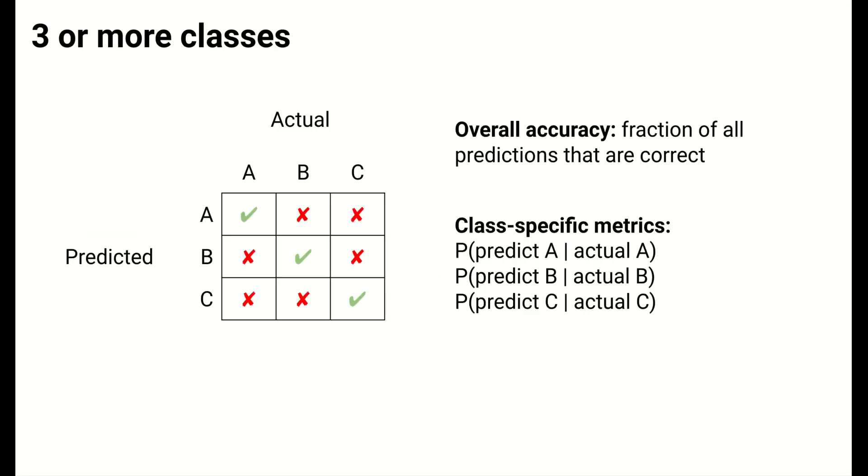So, the metrics we've discussed so far have been in the context of classification problems with two classes. Often, classification will involve three or more classes. Overall accuracy extends directly to the setting. It's still the fraction of all predictions that are correct.